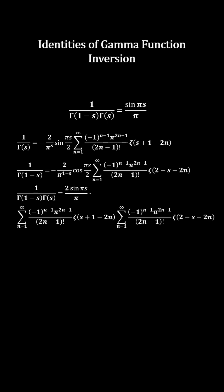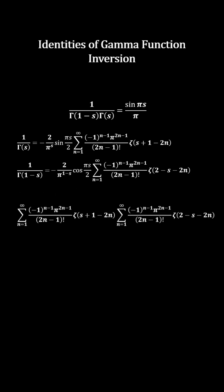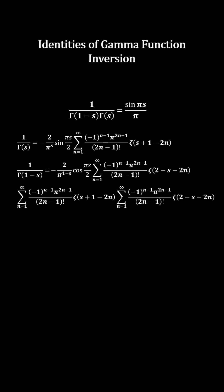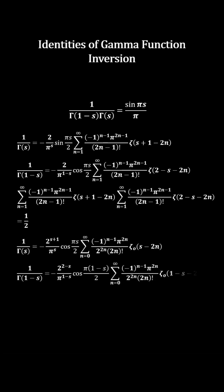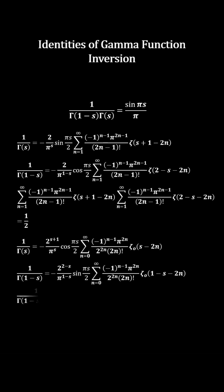the sum of the zetas of s plus 1 minus 2n times the sum of the zetas of 2 minus s minus 2n is 1/2, and the sum of the odd zetas of s minus 2n times the sum of the odd zetas of 1 minus s minus 2n is 1/4.